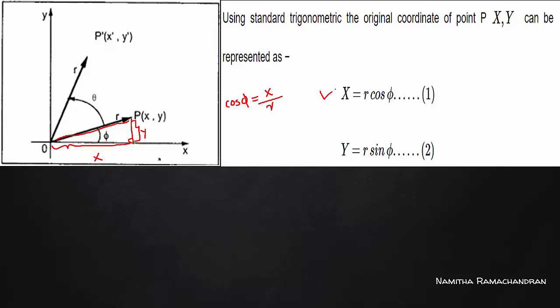For the vertical distance y, we use sin 5. Sin 5 is the perpendicular distance divided by the hypotenuse, meaning y divided by r. So y equals R sin 5. The point has x-coordinate R cos 5 and y-coordinate R sin 5.